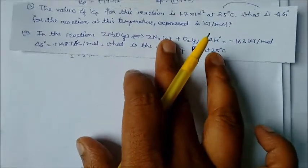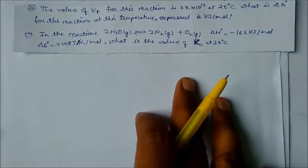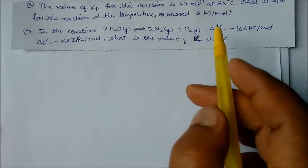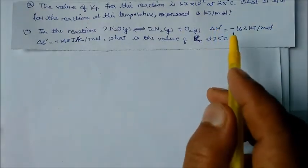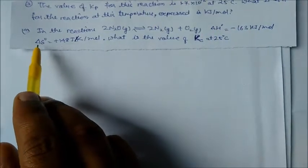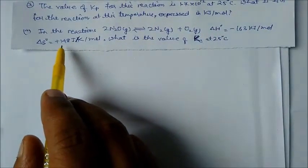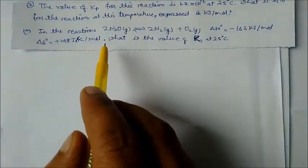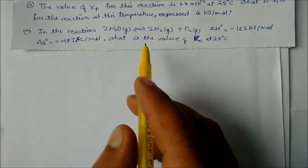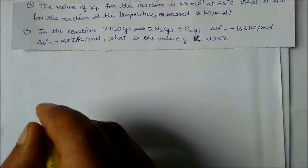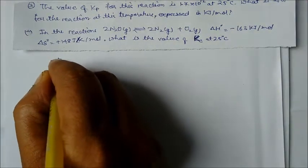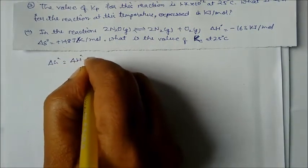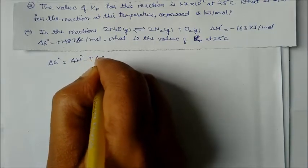Next problem: for the reaction 2N₂O(g) ⇌ 2N₂(g) + O₂(g), ΔH° = −163 kJ/mol and ΔS° = +148 J/K·mol, at 25°C. We use ΔG° = ΔH° − T·ΔS°.